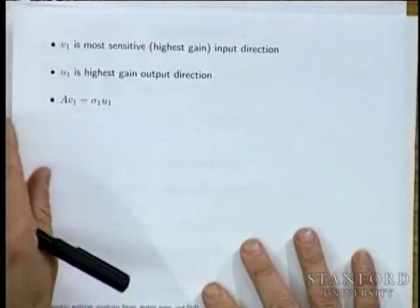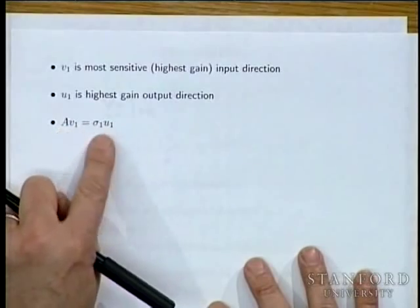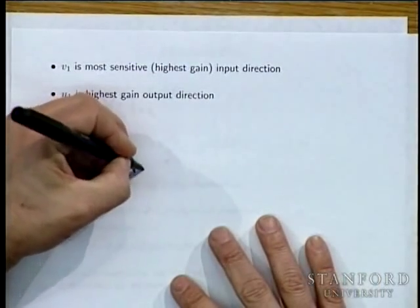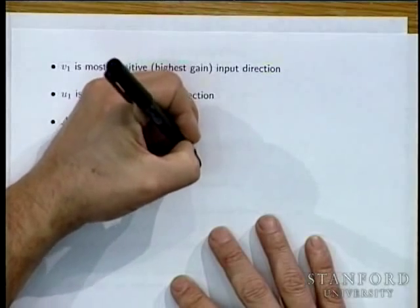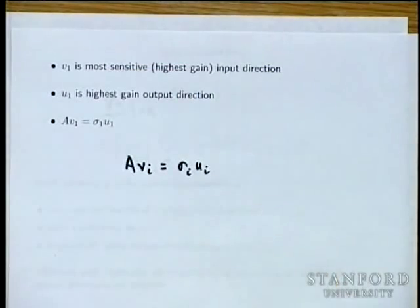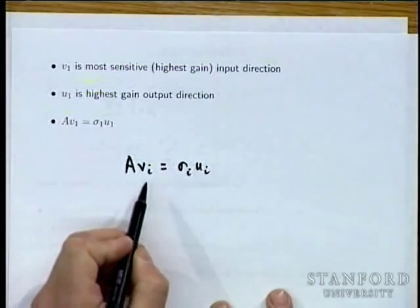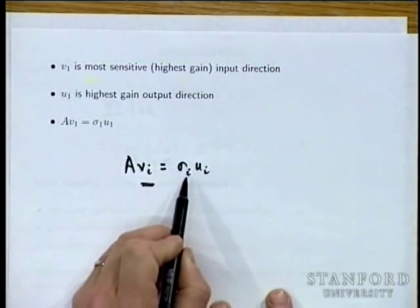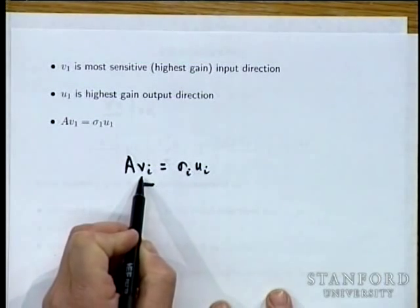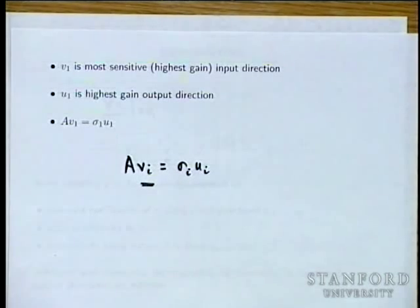U₁ is the highest gain output direction. In general, A V_i = σ_i U_i — the i-th singular input direction is amplified by gain factor σ_i. So the σ_i are gain factors.